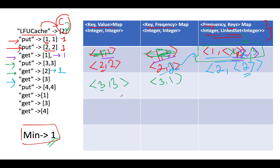The next operation is get(3). Key 3 exists in our map, so we return value 3. We increment key 3's frequency from 1 to 2. We delete 3 from frequency 1's set in the frequency-keys map, and make an insertion at frequency 2. So frequency 2 now has a set containing both keys 2 and 3.